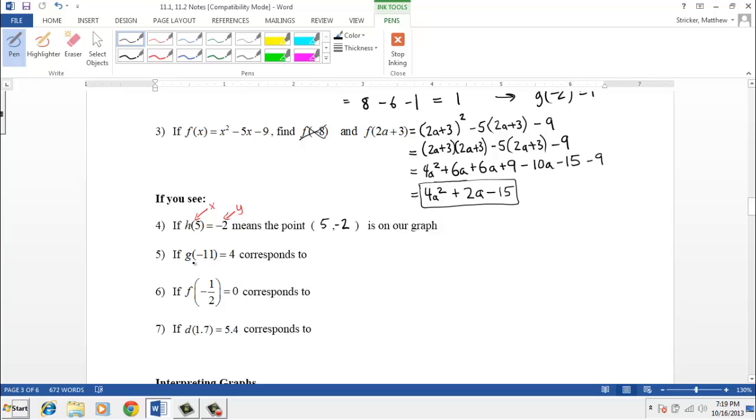This next one, g of negative 11 equals 4. Notice it's a new function name, it's not called h anymore, it's called g, but still it's saying that when x is negative 11, y is 4, which corresponds to the point negative 11, 4.